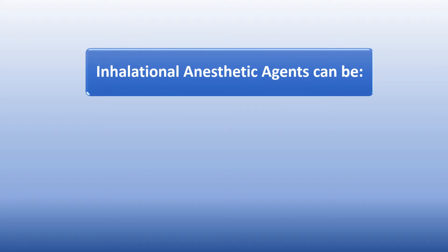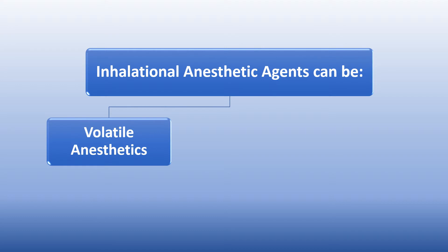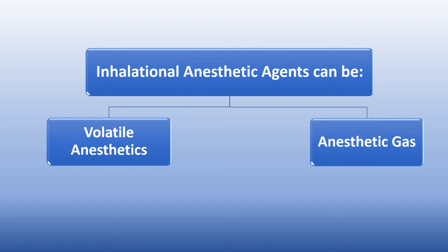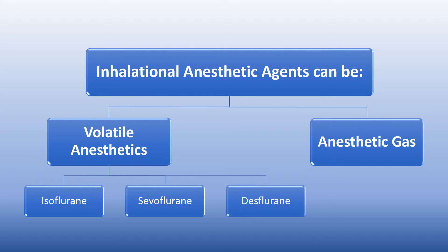Inhalational anesthetic agents can be either volatile anesthetics — that is, the anesthetic is in the form of a liquid solution present in bottles, but this liquid is very volatile and can be transferred to vapor which the patient inhales — or present in a gas form stored in cylinders. Examples of volatile anesthetics are isoflurane, sevoflurane, and desflurane.